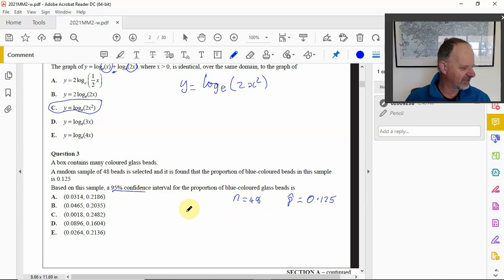The proportion, that's p-hat, proportion of blue is 0.125 in that sample. Based on the 95% confidence interval, so a 95% confidence interval, it is 1.96. The z values for 90, 95, and 99 you should have them written in your bound reference so you've got easy access to them.